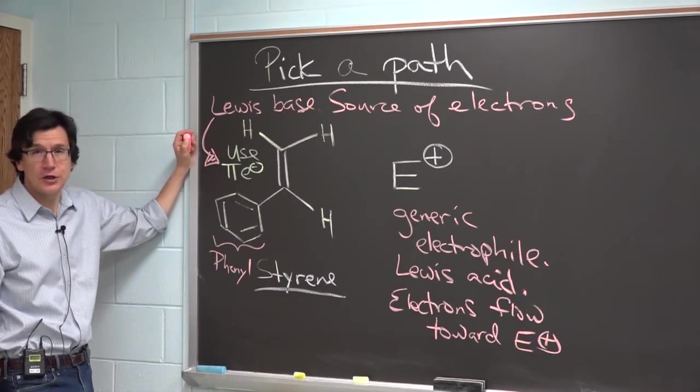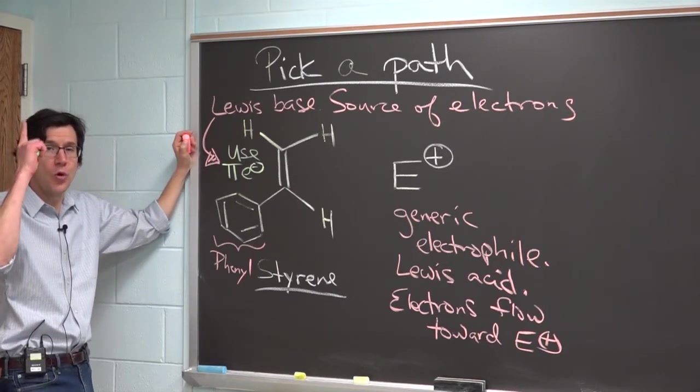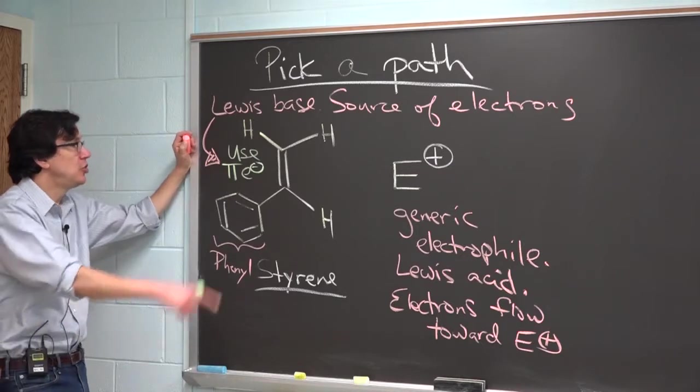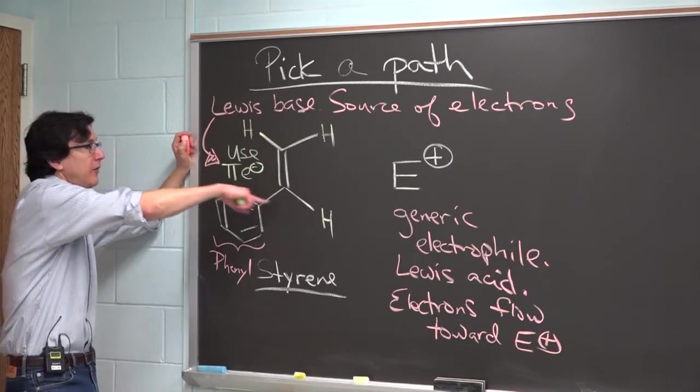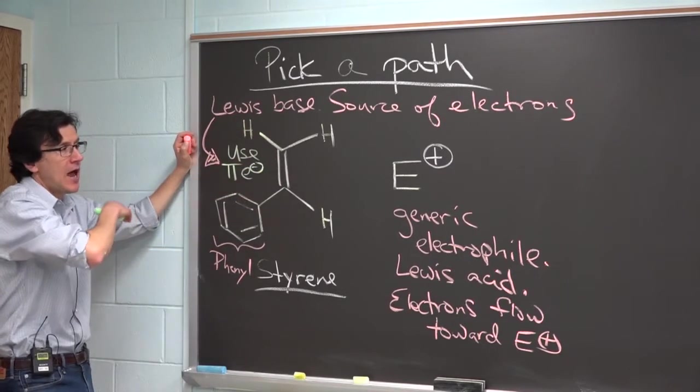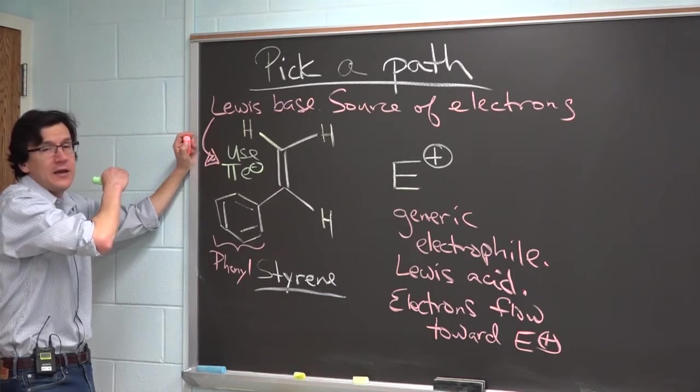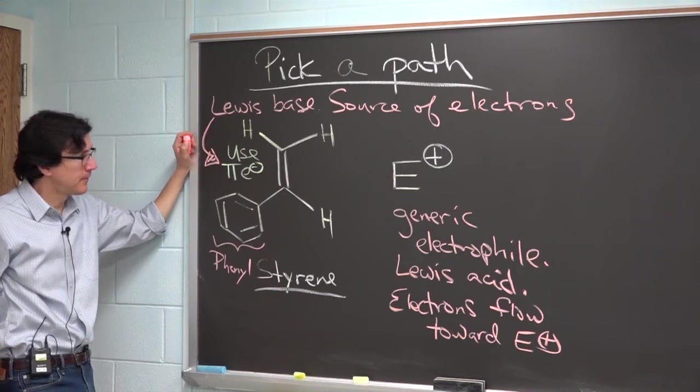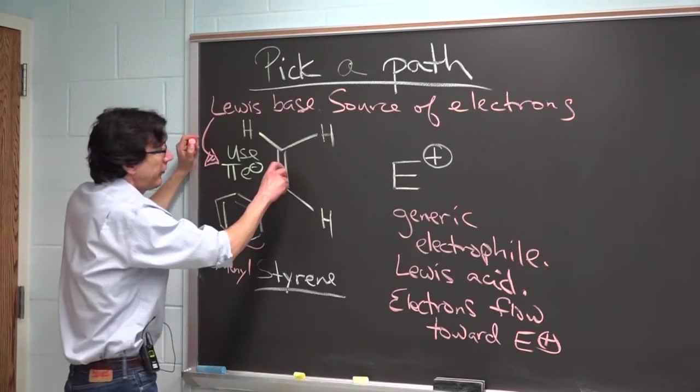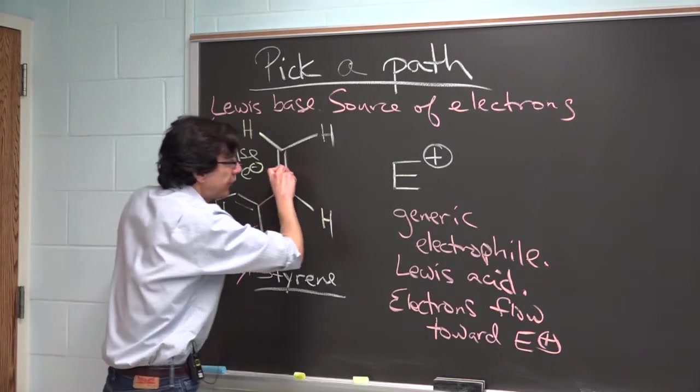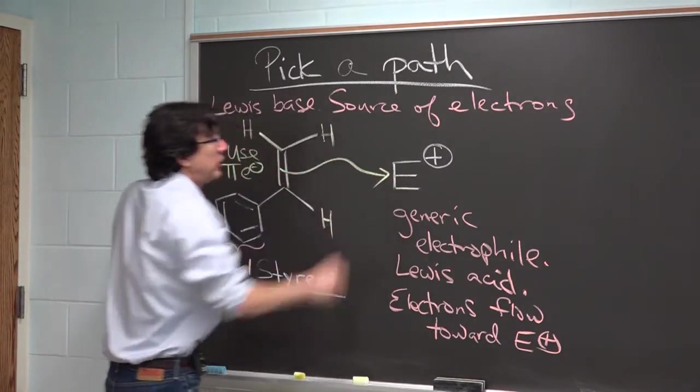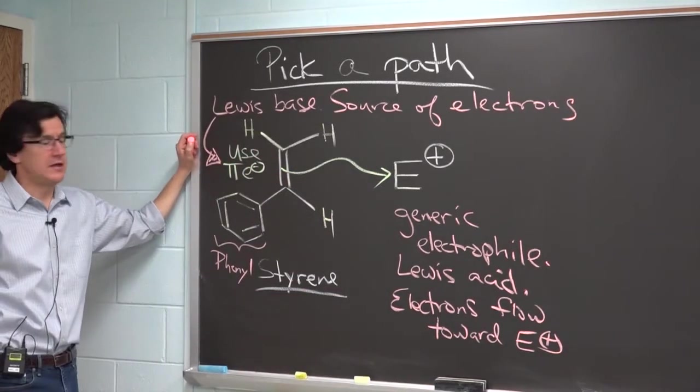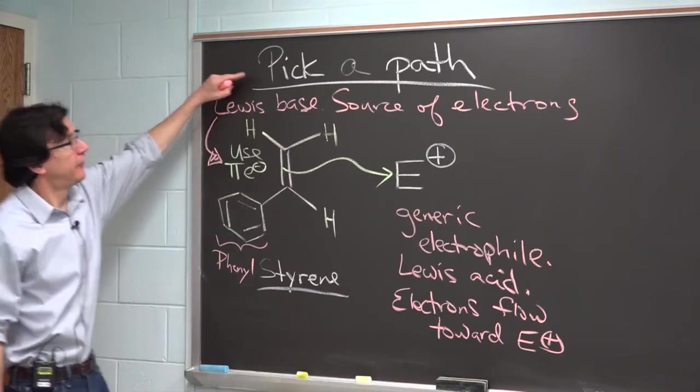The next thing I invite you to do is to just push one arrow in which you show the pi electrons of the double bond of styrene acting as the Lewis base and interacting with the electrophile. Here it goes. Here are the two electrons from here, and we're going to make a bond to E.